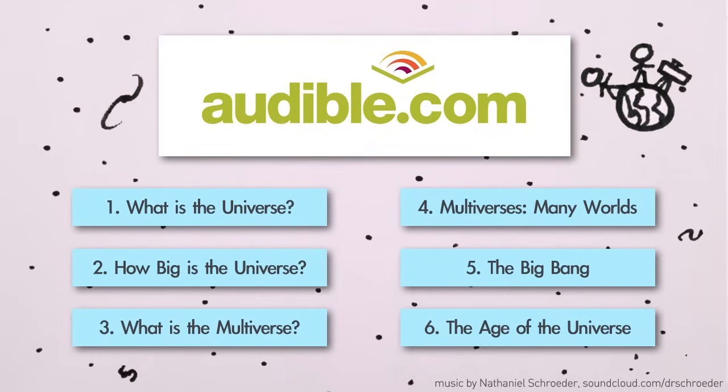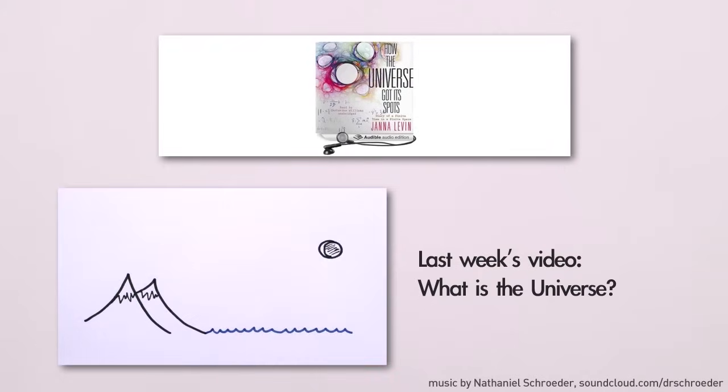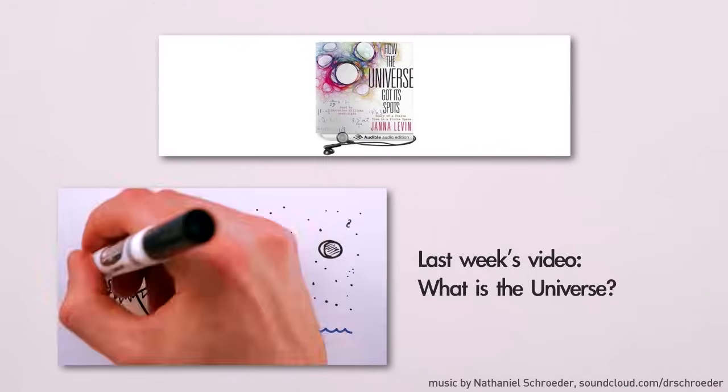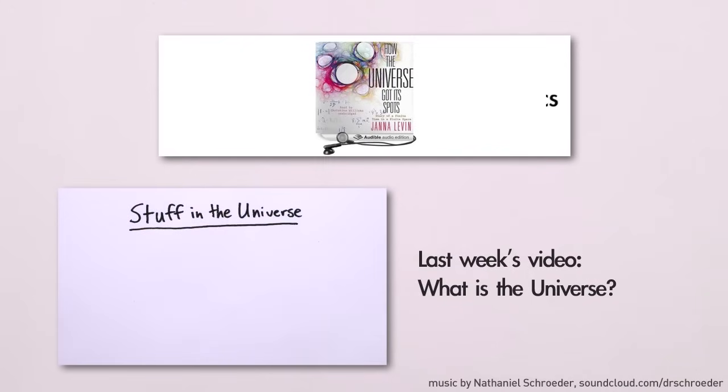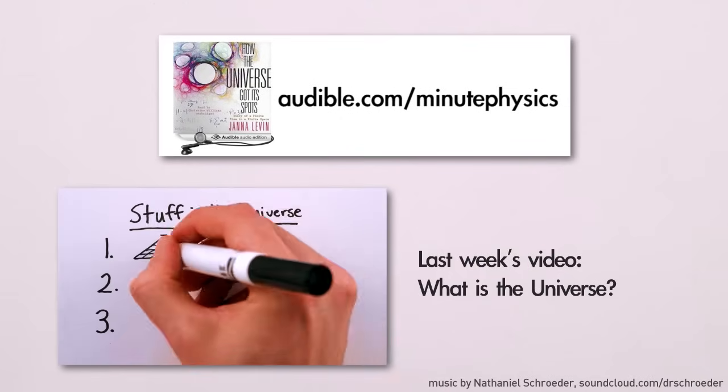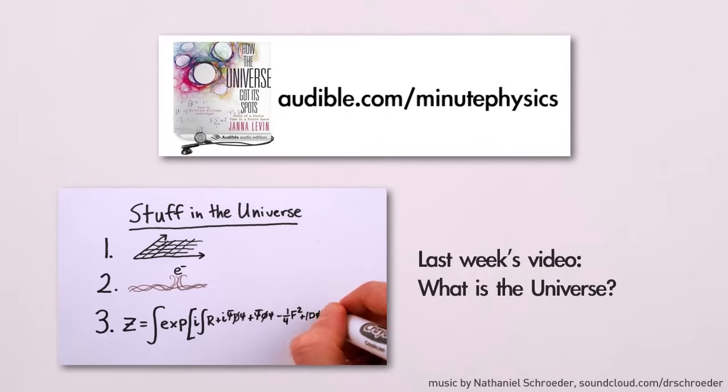This episode of MinutePhysics is supported by Audible.com, the leading provider of audiobooks across all types of literature, including fiction and nonfiction, and periodicals. To learn more about why we think the universe has the size and shape that we think it does, check out How the Universe Got Its Spots by Jana Levin. You can download this audiobook or another of your choice for free at audible.com/minutephysics. Again, thanks to Audible for making it possible for me to keep producing MinutePhysics and for giving you a free audiobook at audible.com/minutephysics.